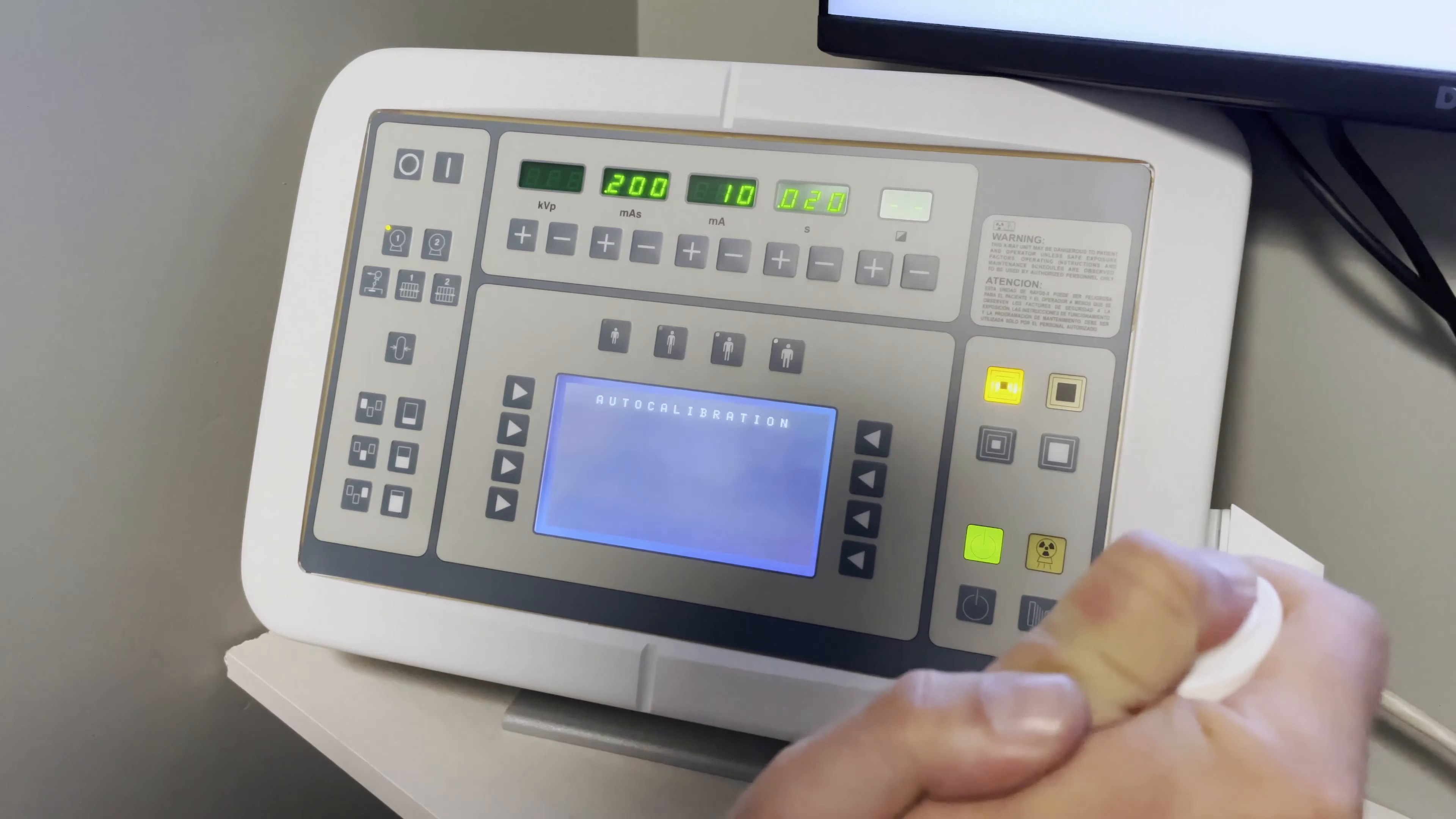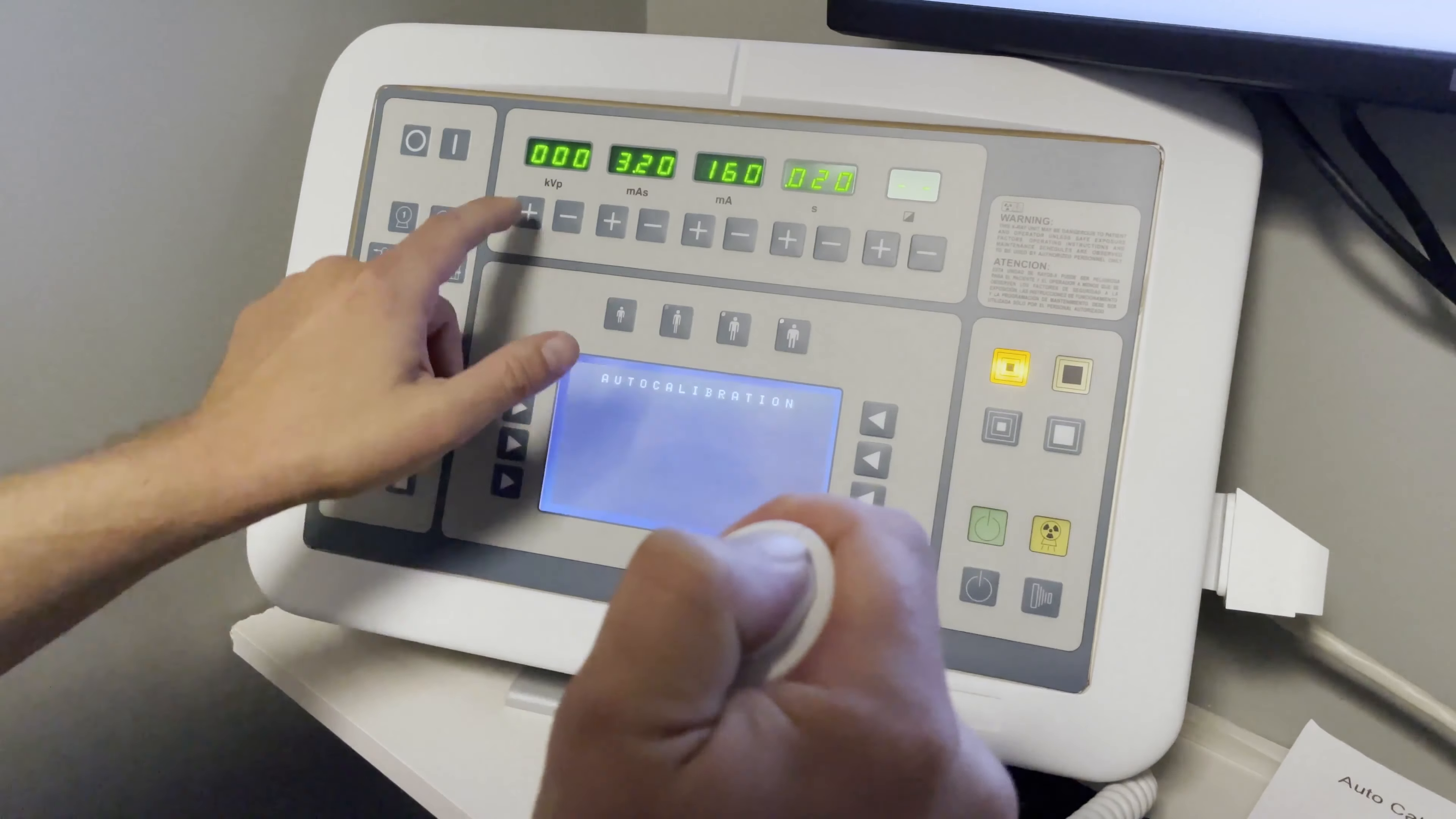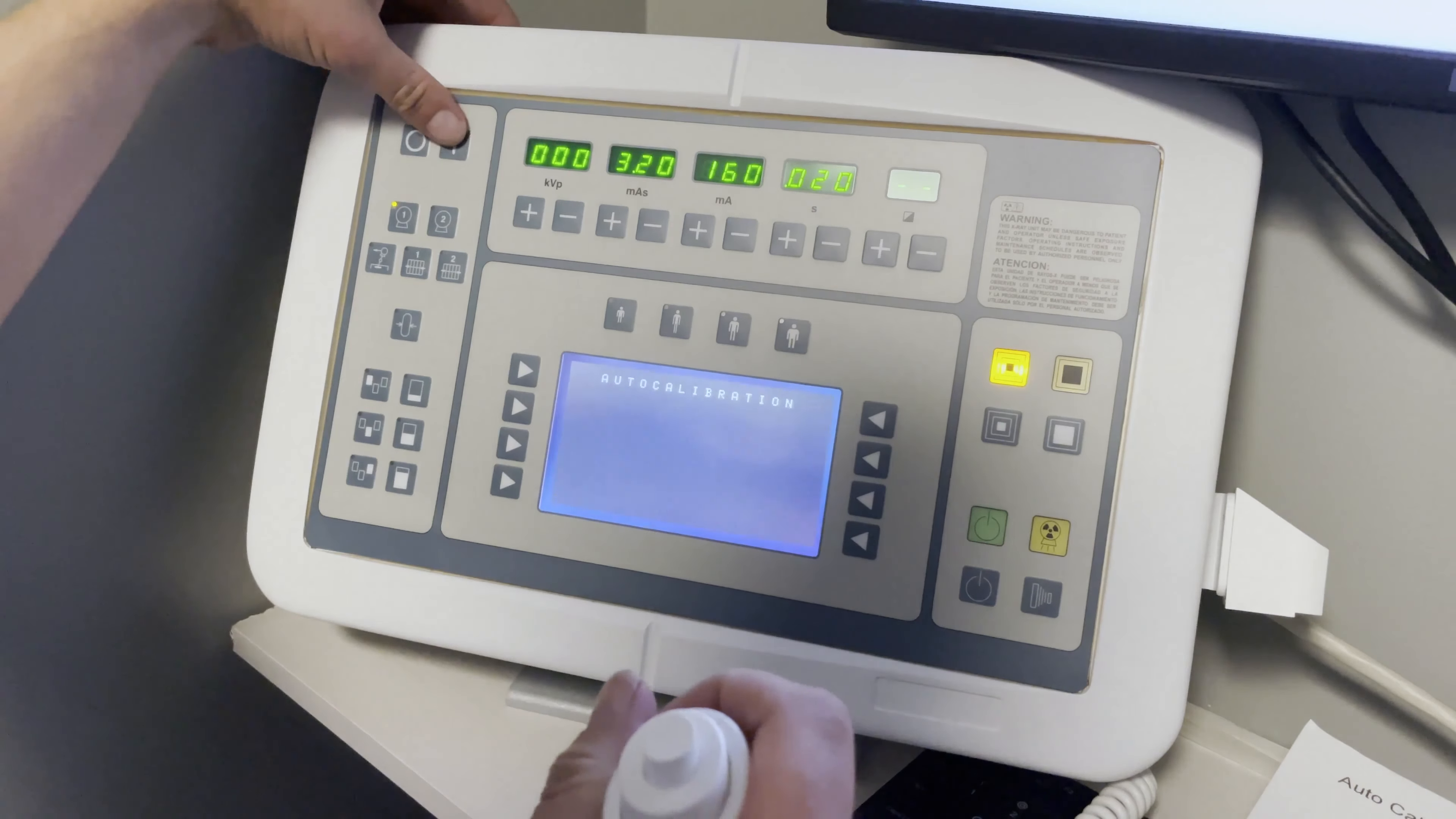You're going to hear the tube and the generator in the background taking a series of x-rays. Now that we've completed, if I see the nine nines on the KVP, I can now take my finger off. And we have calibrated the low focal. The next step that you want to do is press and hold on the I button.